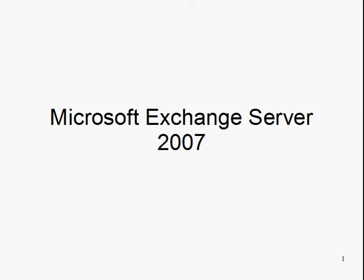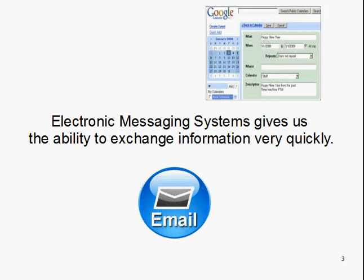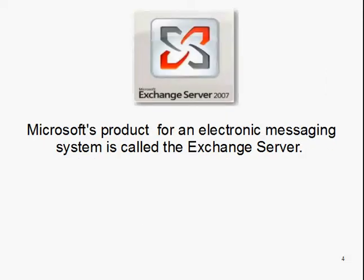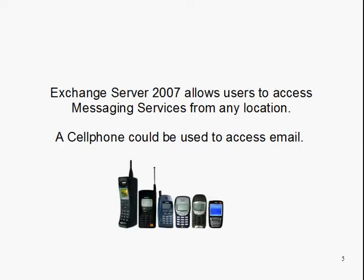Microsoft Exchange Server 2007 Overview. Electronic Messaging Systems give us the ability to exchange information very quickly. Microsoft's product for an electronic messaging system is called the Exchange Server. Exchange Server 2007 allows users to access messaging services from any location.